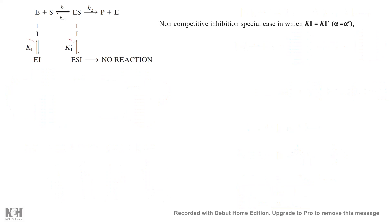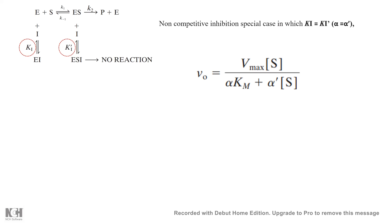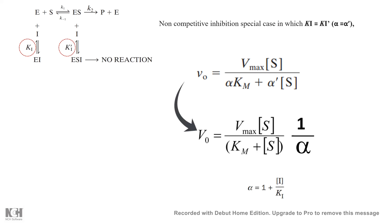For non-competitive inhibition, Ki and Ki-dashed are equal because the inhibitor has the same affinity toward the enzyme-substrate complex and toward the free enzyme. So both rate constants are equal, meaning alpha equals alpha-dashed. In that situation, the mixed inhibition equation reduces to: V₀ = Vmax·[S] / (Km + [S]) · (1/α). We can clearly see that Km has not changed, but Vmax has been reduced by a factor of alpha, so the enzymatic reaction cannot reach its original maximum velocity.